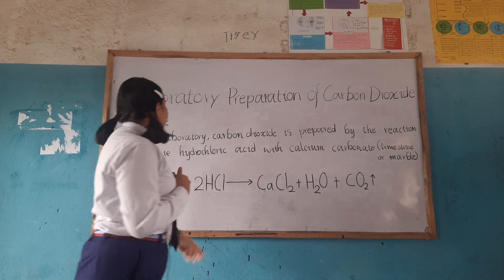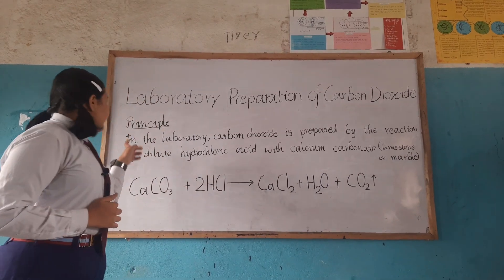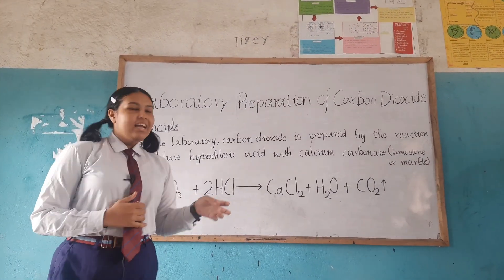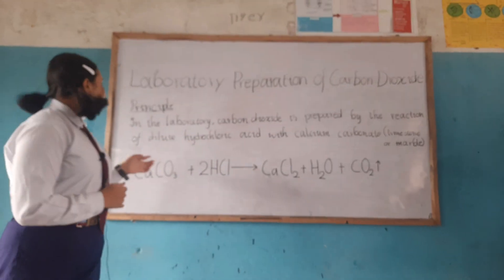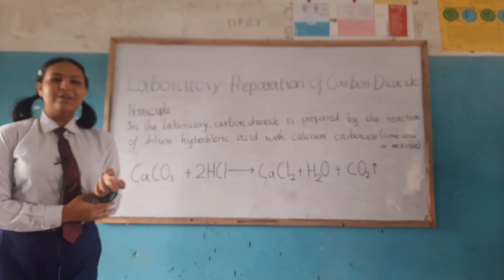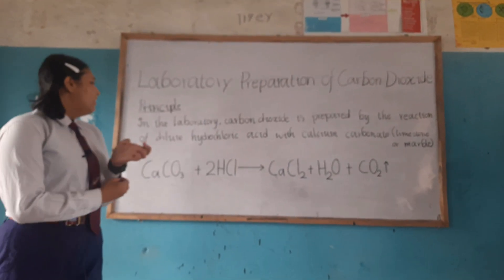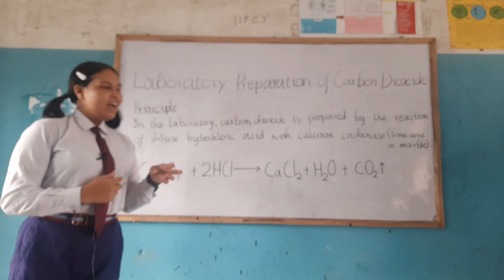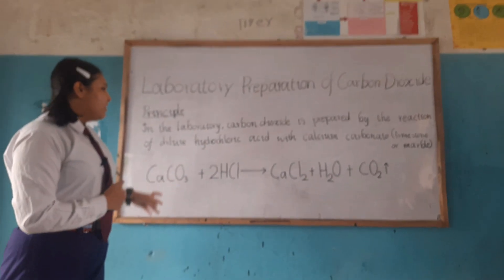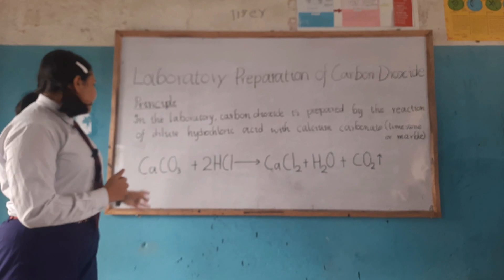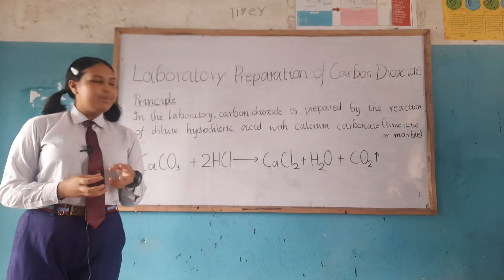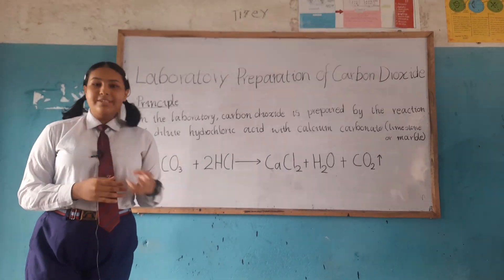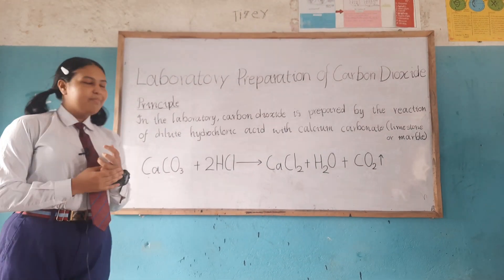Today we are discussing the laboratory preparation of carbon dioxide. First, we have to learn about its principle. The preparation is based on the chemical reaction of dilute hydrochloric acid with calcium carbonate, which is also called limestone or marble.